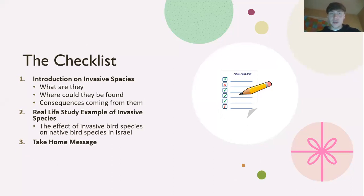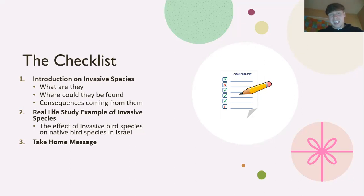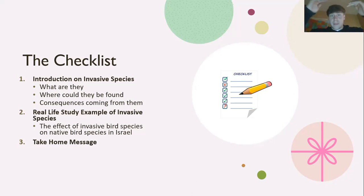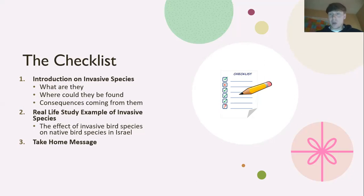Sometimes when I'm an audience member listening to a presenter, I zone out, and when I zone out I get lost and don't know what's being talked about. So by giving an outline or brief introduction, you guys can understand what's going to be covered. The first thing I'm going to do is talk about invasive species and what they are. Even if you're familiar with them, I need to give a formal introduction before diving into a specific example.